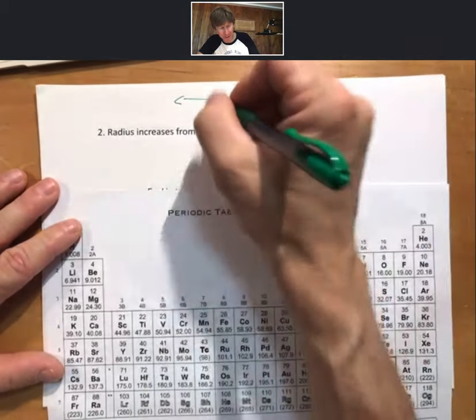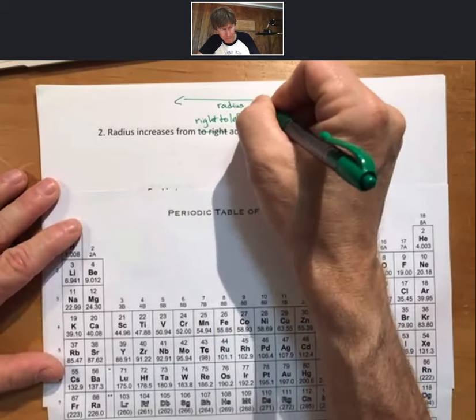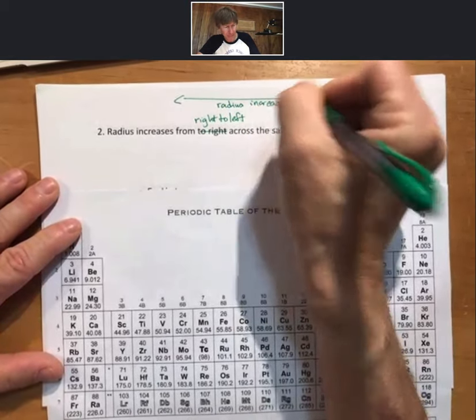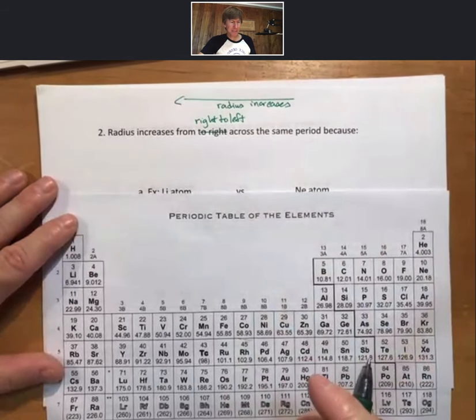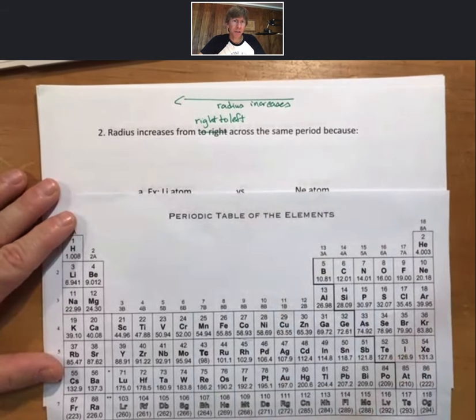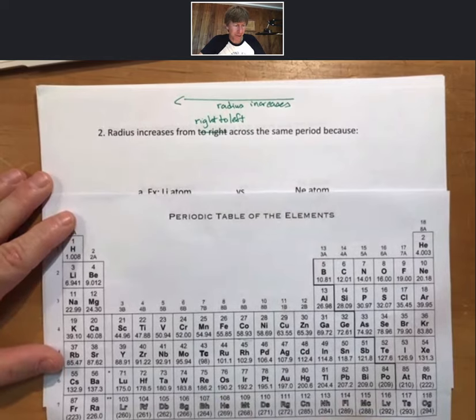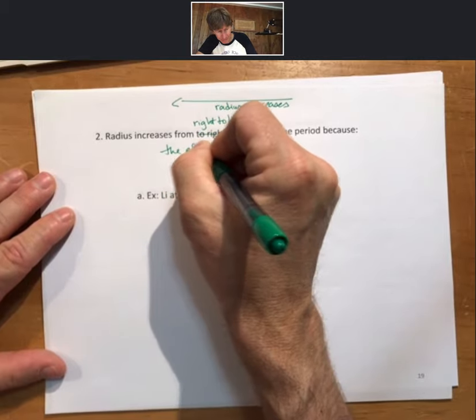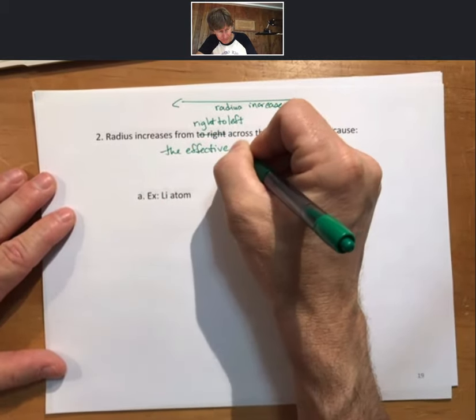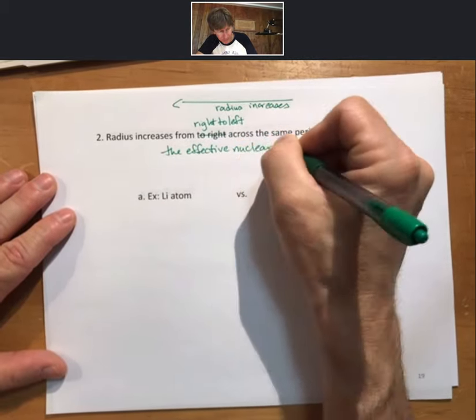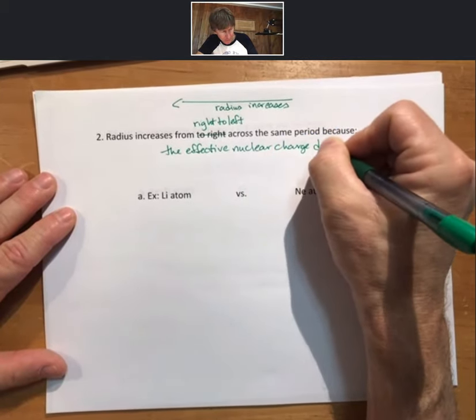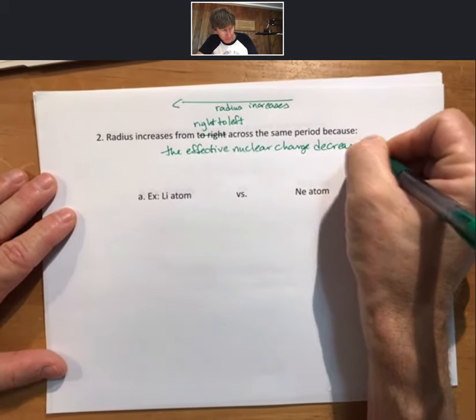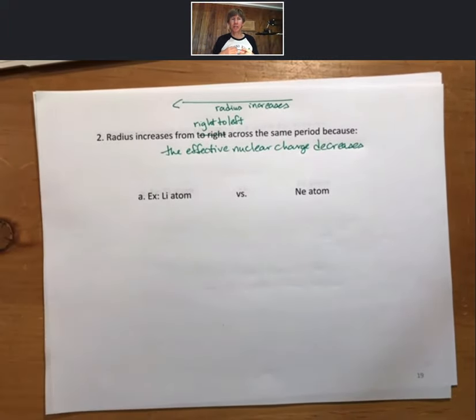I apologize for that typo. Radius increases from right to left, that means as you go this way to the left, radius increases because the effective nuclear charge decreases, which means there is less nuclear charge pulling the electrons towards the nucleus.